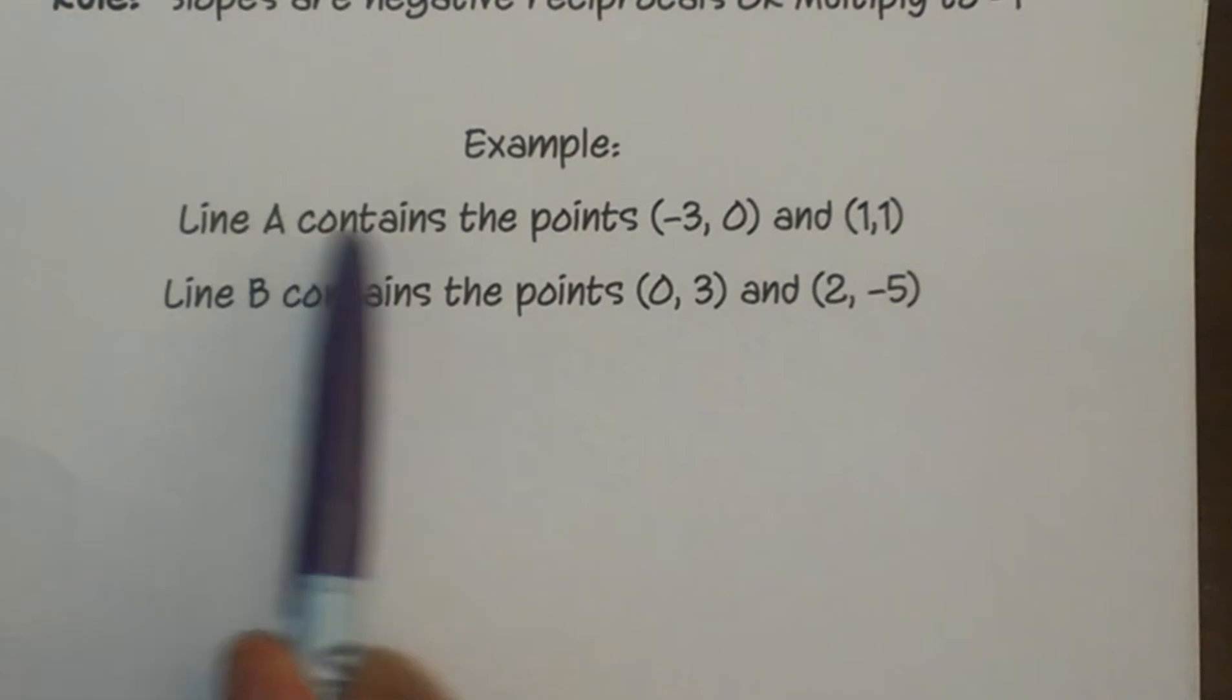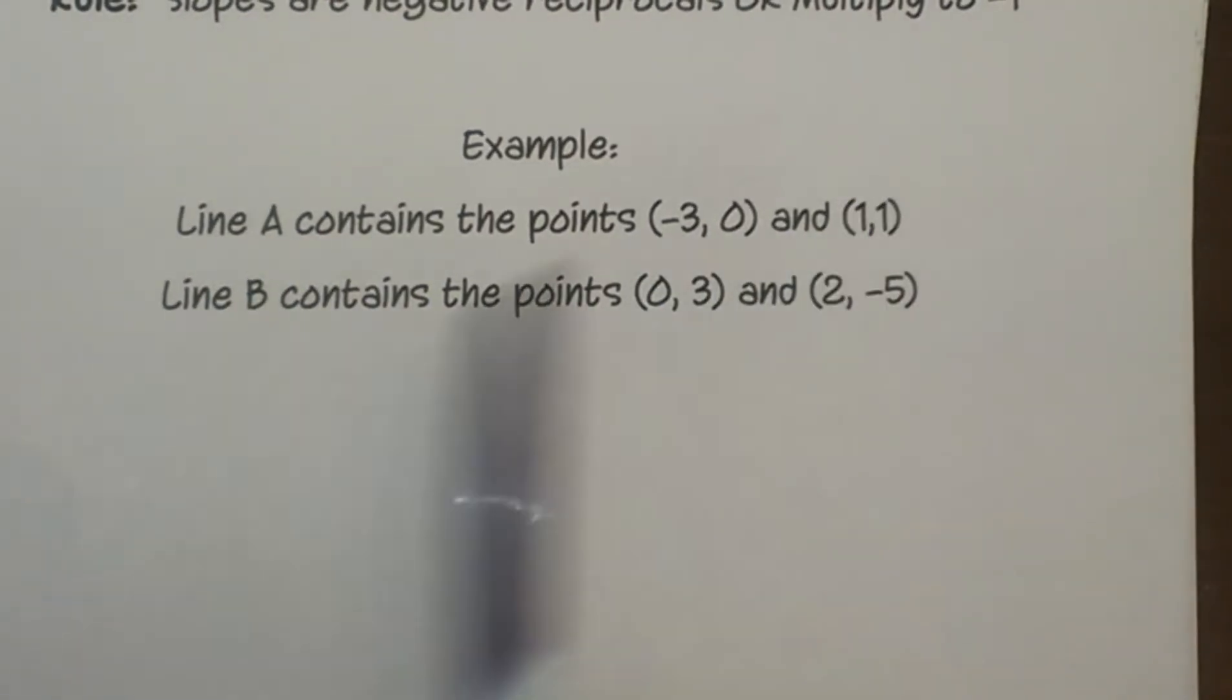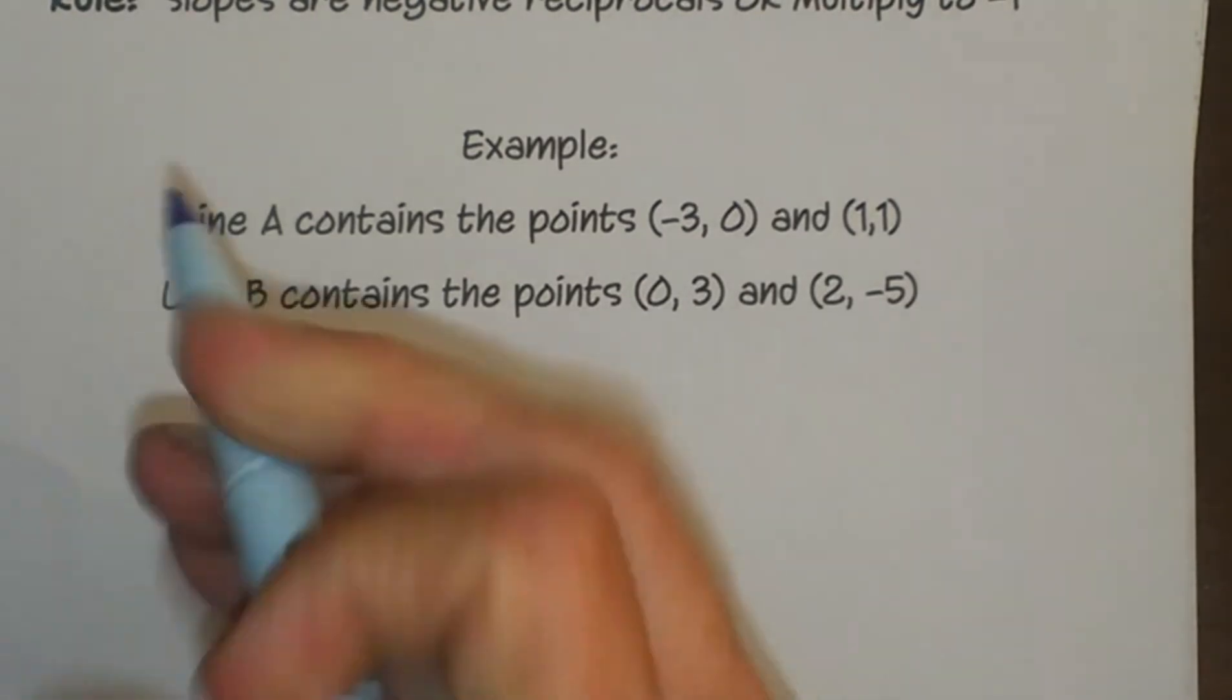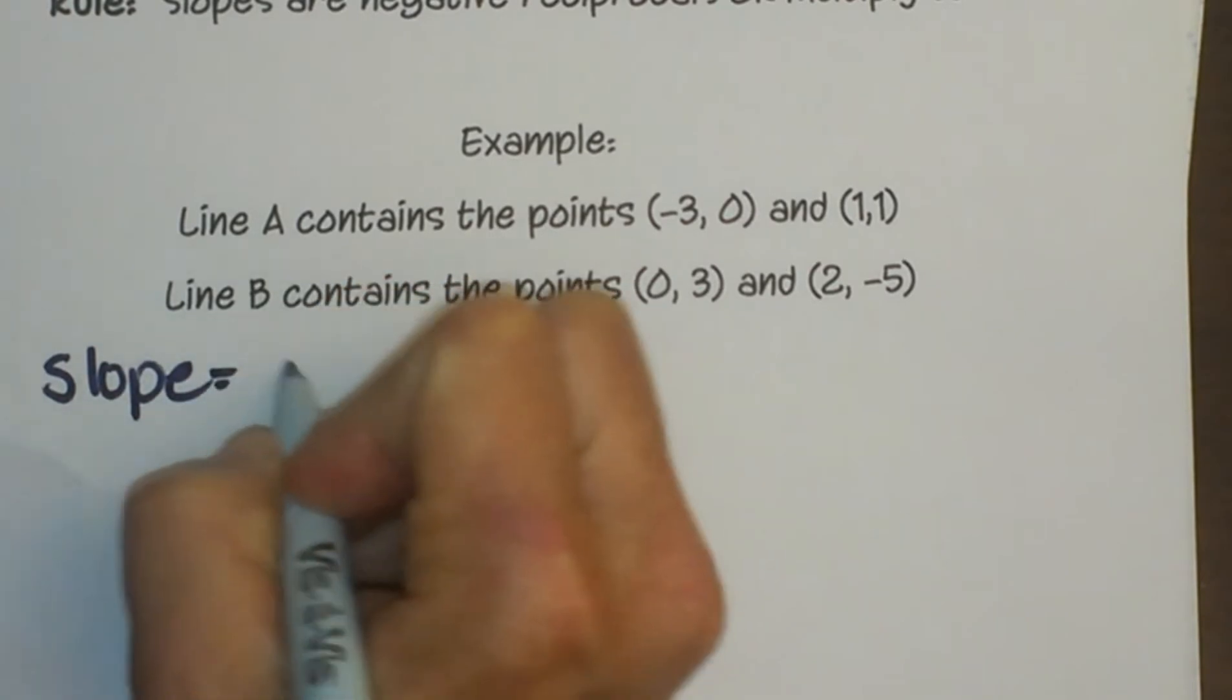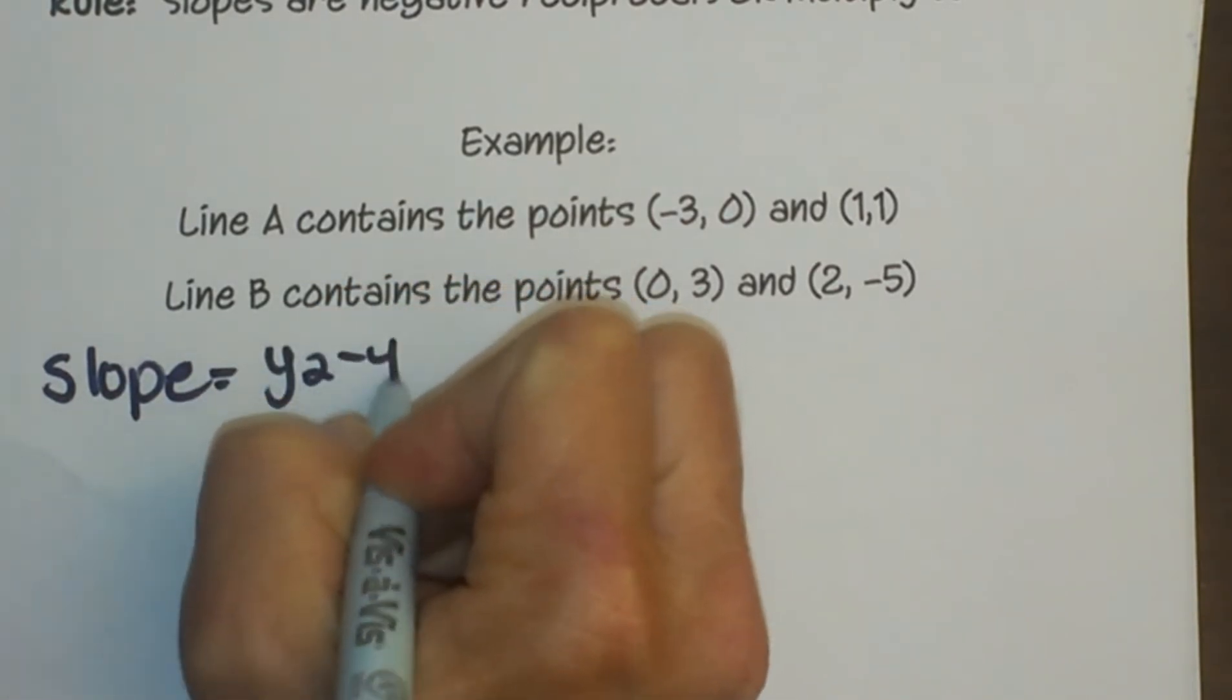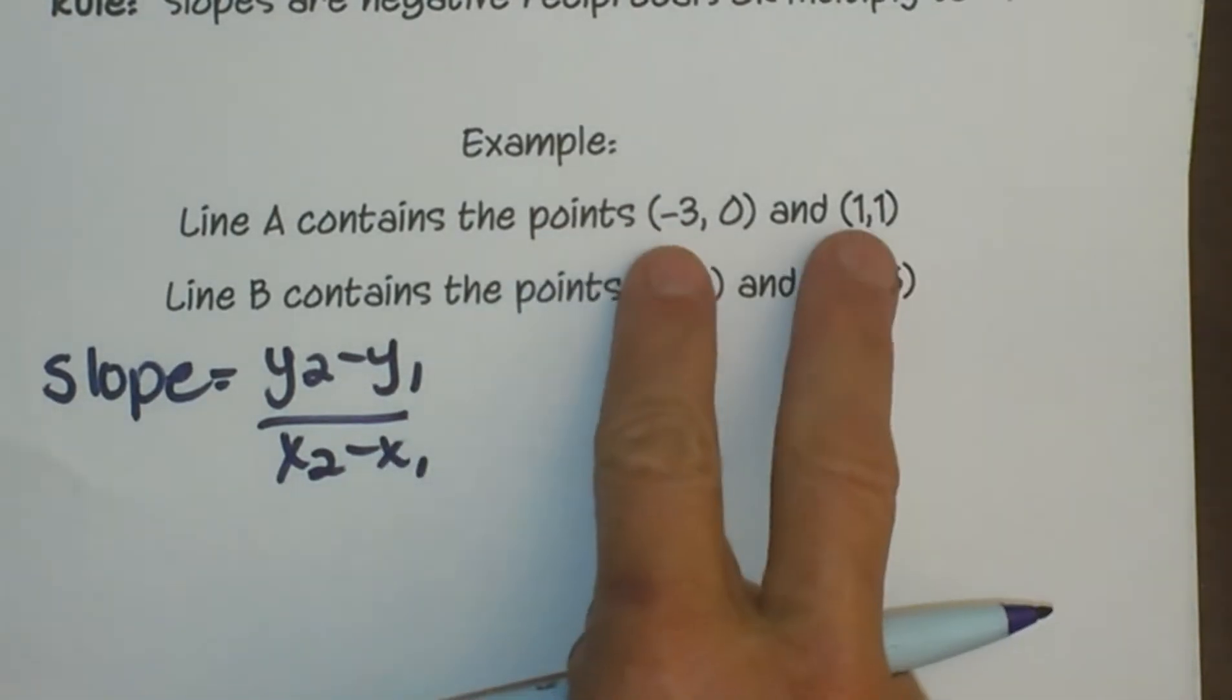We are looking at line A contains a point (-3, 0) and (1, 1). We need to find the slope of line A. So let's first write the slope equation. The slope equation is equal to y2 minus y1 over x2 minus x1.